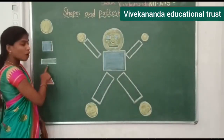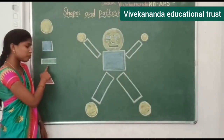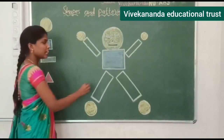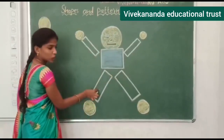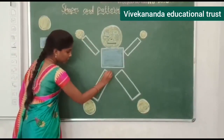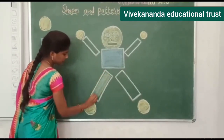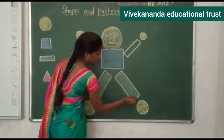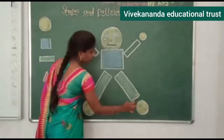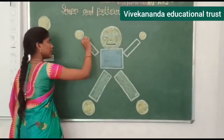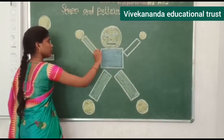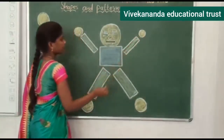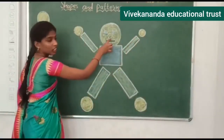Next, what shape is this? Rectangle. Rectangle is in what colour? Green. So we have to give green colour to all the rectangles. This is rectangle — give green colour. And this is also rectangle in shape. And the mouth — this is also rectangle.